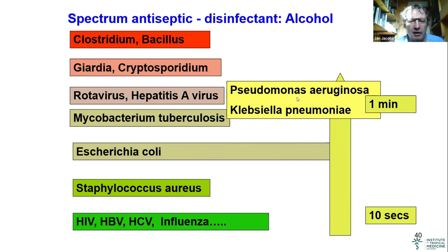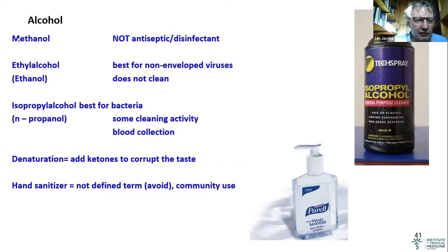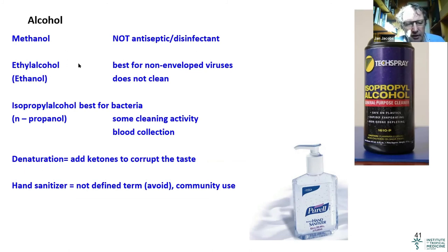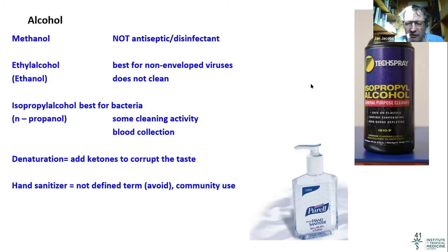Alcohol is an active antiseptic and disinfectant. Remember that methanol is not an antiseptic — methanol is for combustion and burning. It is ethanol, the two-carbon alcohol also found in beverages, that is the antiseptic. Ethanol is best for non-enveloped viruses. Long-chain alcohols — isopropyl alcohol, for instance — are better for bacteria and have some cleaning activity. You see isopropyl alcohol used as a general-purpose cleaner for keyboards and computers. It is preferred for blood collection and blood transfusion, because people traveling on dusty roads can have highly dust-loaded skin.